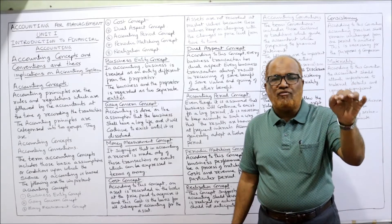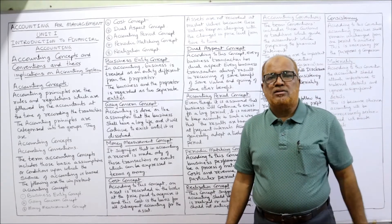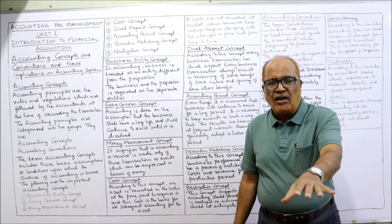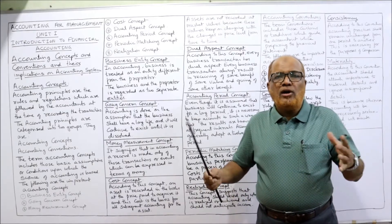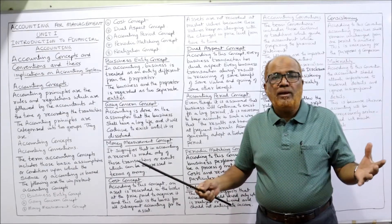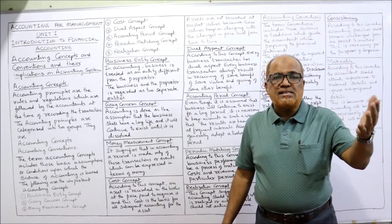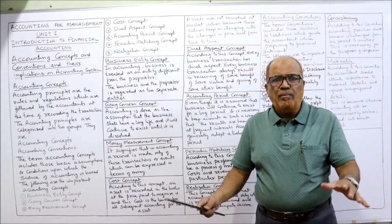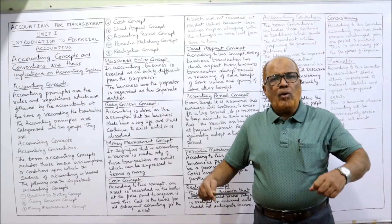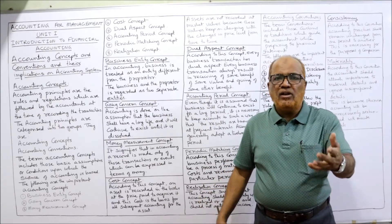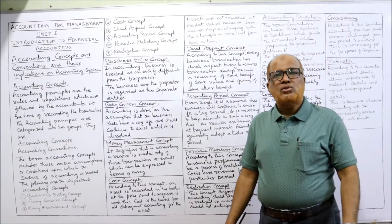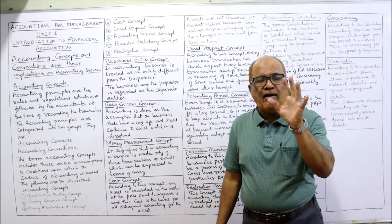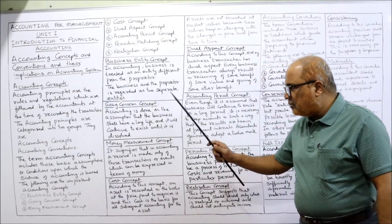Next, the money measurement concept. According to this concept, only those transactions which can be measured in terms of money will be recorded. Only monetary transactions will find a place in accounting. Non-monetary transactions will not be recorded — for example, the skill, knowledge, and experience of managers, or the efficiency of employees, will not be recorded because they are non-monetary.